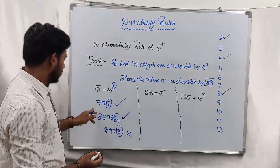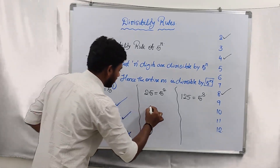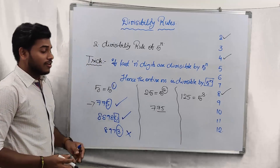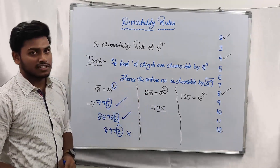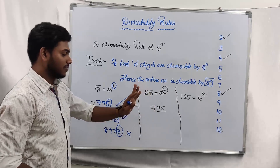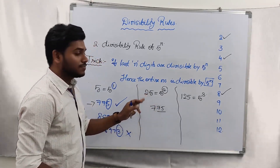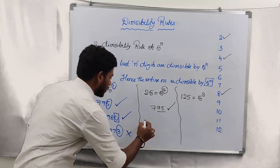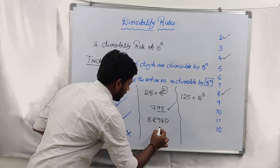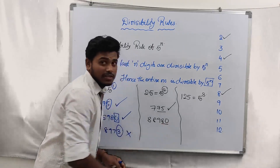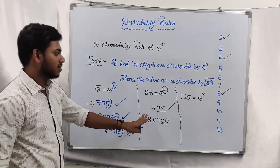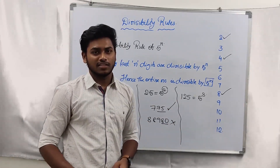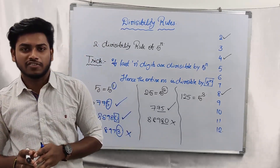Let's take one more example. Consider 775 again — here n value is 2, so the last two digits are 75. If 75 is divisible by 25, then the entire number is divisible by 25. For the second number, 8980, the last two digits are 80, but 80 is not divisible by 25. Hence this number is not divisible by 25. You can apply this rule for 125 and 625 as well, since 625 can be written as 5^4.